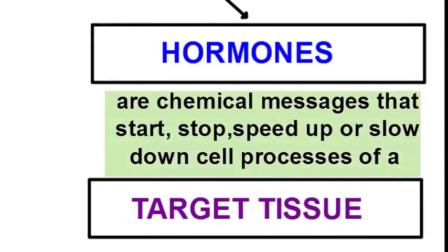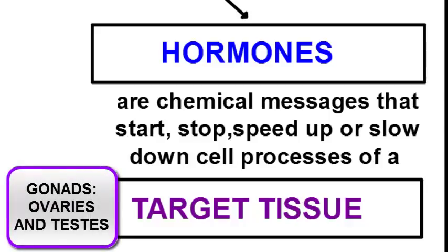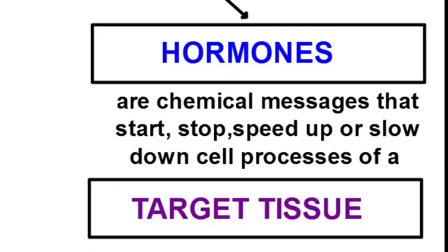Hormones are chemical messages that can start, stop, speed up, or slow down a process of a target tissue or target organ. Target tissues and organs are the specific tissues and organs that hormones will react with. For example, follicle-stimulating hormone affects the gonads — the ovaries and testes. It won't affect the kidneys, small intestine, muscle tissue, stomach, or heart, because those are not the target organs.